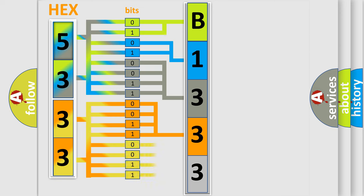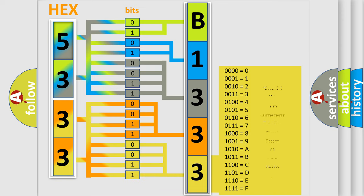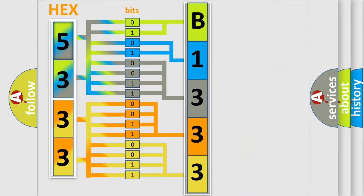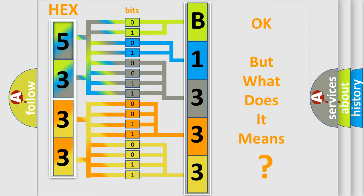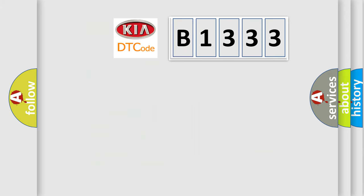A single byte conceals 256 possible combinations. We now know in what way the diagnostic tool translates the received information into a more comprehensible format. The number itself does not make sense to us if we cannot assign information about what it actually expresses.